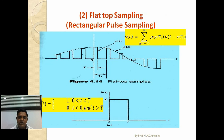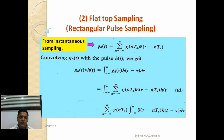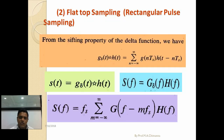In flat top sampling, the top is flat, hence it is called flat top sampling. The output h(t) equals one if t is greater than zero but less than τ, and h(t) equals zero if t is less than zero or t is greater than capital T. From instantaneous sampling, we find this equation via convolution, and the shifting property of the delta function is applied.